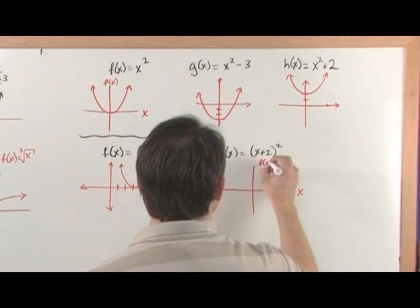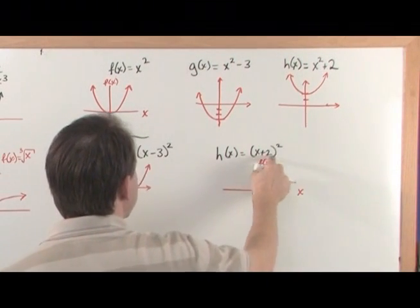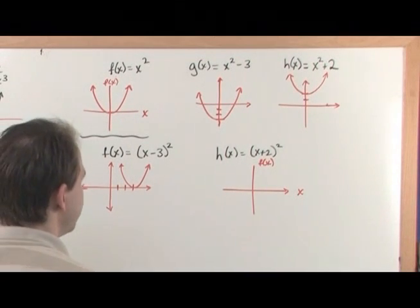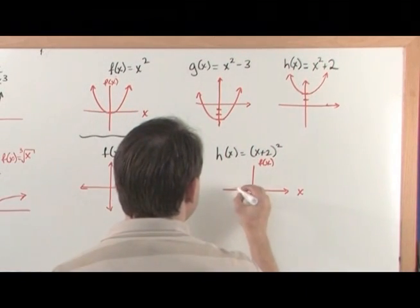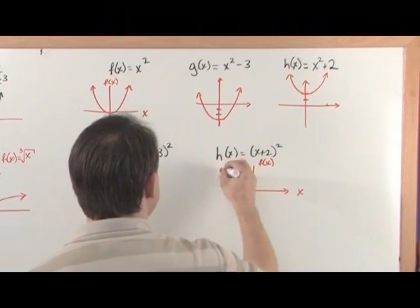You have x and f of x. It's the same thing. You've got x squared going on, but instead of x minus something, you've got an x plus something, so that's a horizontal shift to the left two places and that's going to graph like this.